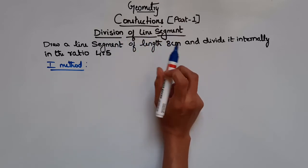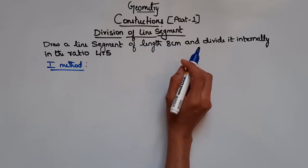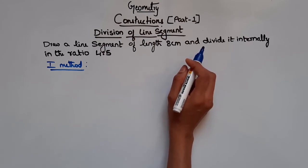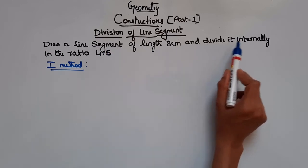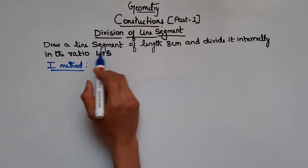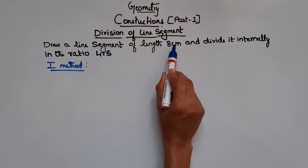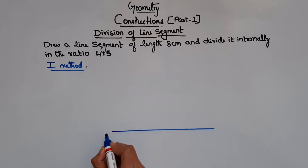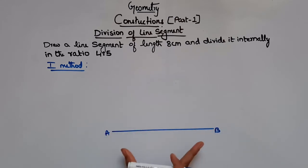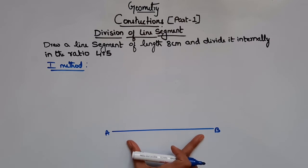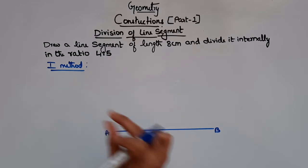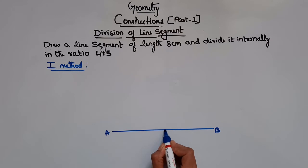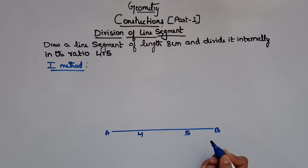Division of line segment can be done by two methods, and in this problem we will see both methods so you can choose either one. The problem says: draw a line segment of length 8 cm and divide it internally in the ratio 4 is to 5. So we have to draw a line segment AB of length 8 cm, then find a point on AB such that that point divides the line in the ratio 4 is to 5.